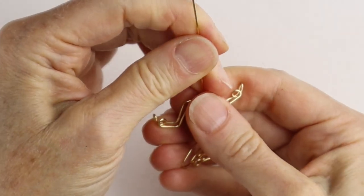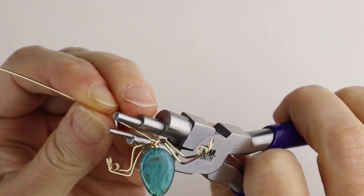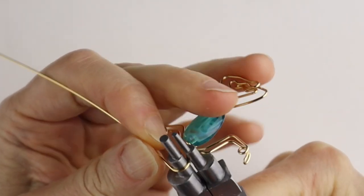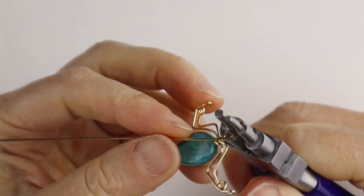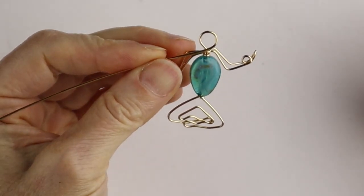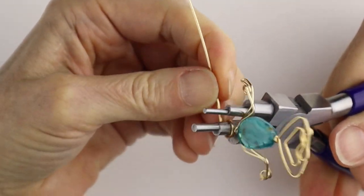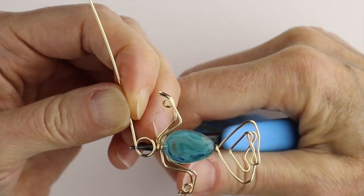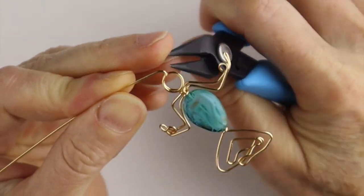Then you need to form the head. So just bend that over to the side, take your bail pliers, whatever size head you want. Just bring this one around, see if that's the right size, bring it all the way up. Then we'll make a little loop to hang it from, so just bring it over.